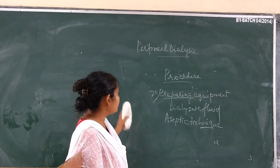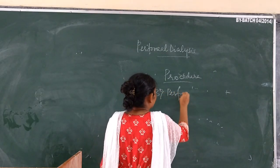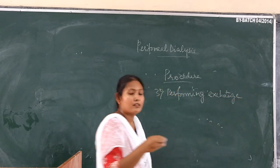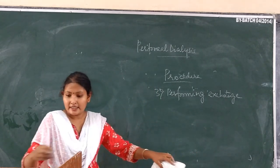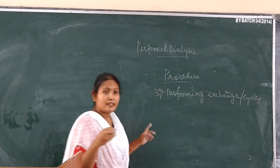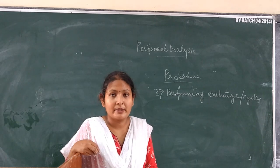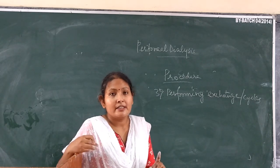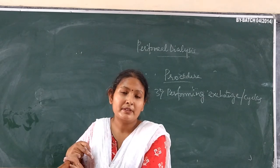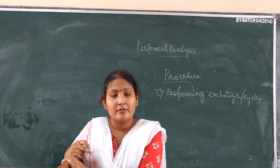The third step of the procedure is performing the exchange. The exchange, also called a cycle, involves fluid being exchanged in the peritoneal cavity. Normally, hemodialysis requires around 6 to 8 hours, but a single cycle of peritoneal dialysis to remove waste products takes around 36 to 48 hours.